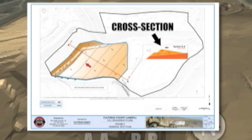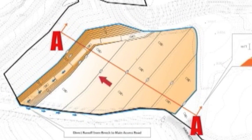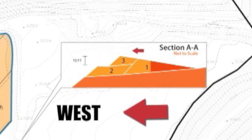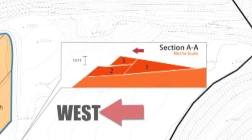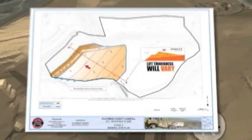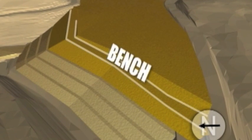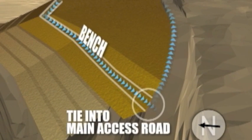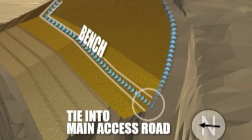Cross sections are cut along the line between the letters — in this case AA — and viewed in the direction of the arrows. As you did earlier, you'll work toward the west, creating a 10-foot lift whenever possible. However, the lift thickness will vary in some areas. No down drains will be required here. However, you will be constructing a bench along the west slope. This bench will direct surface water to the west. The elevation of this bench is critical because the goal is to tie this bench into the main access road and direct drainage back to the east.